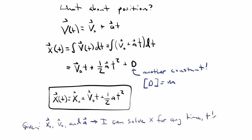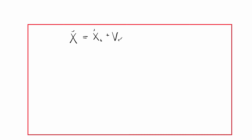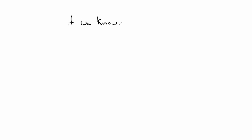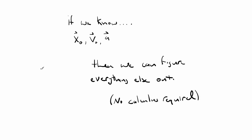Just like that, we have two equations that will describe the position and velocity as a function of time for any object that has a constant acceleration. If we know the object's initial position, initial velocity, and acceleration, then we can figure out the position and velocity at any point in time, no calculus required.